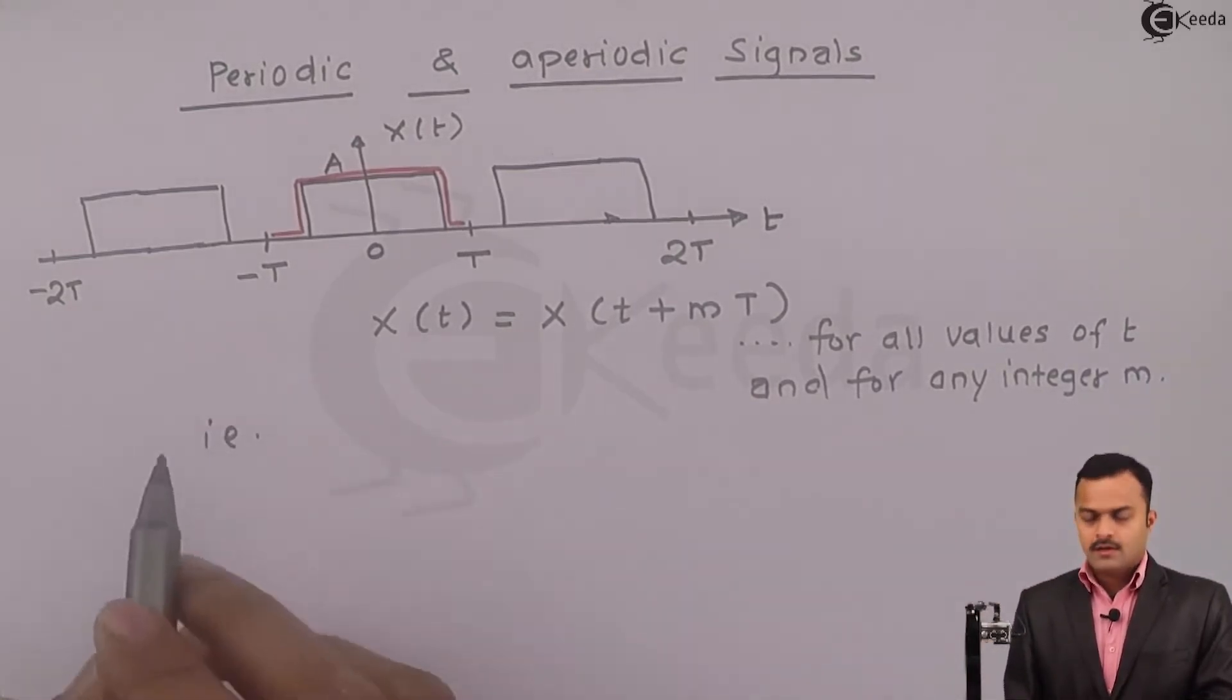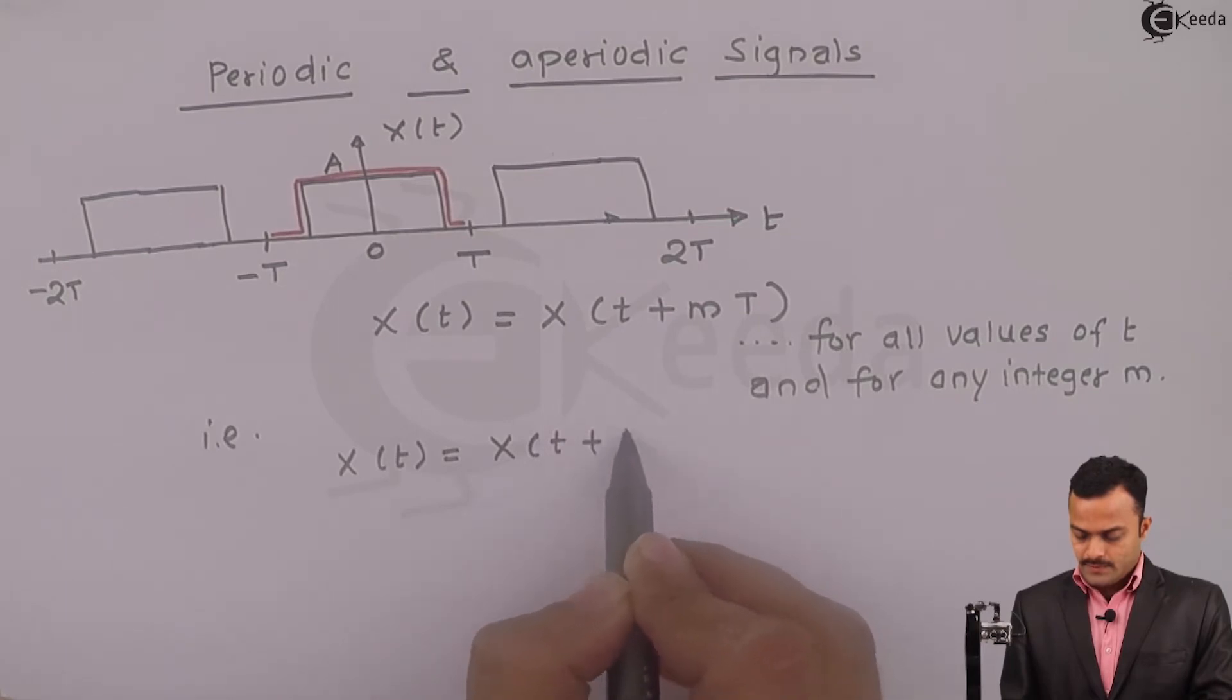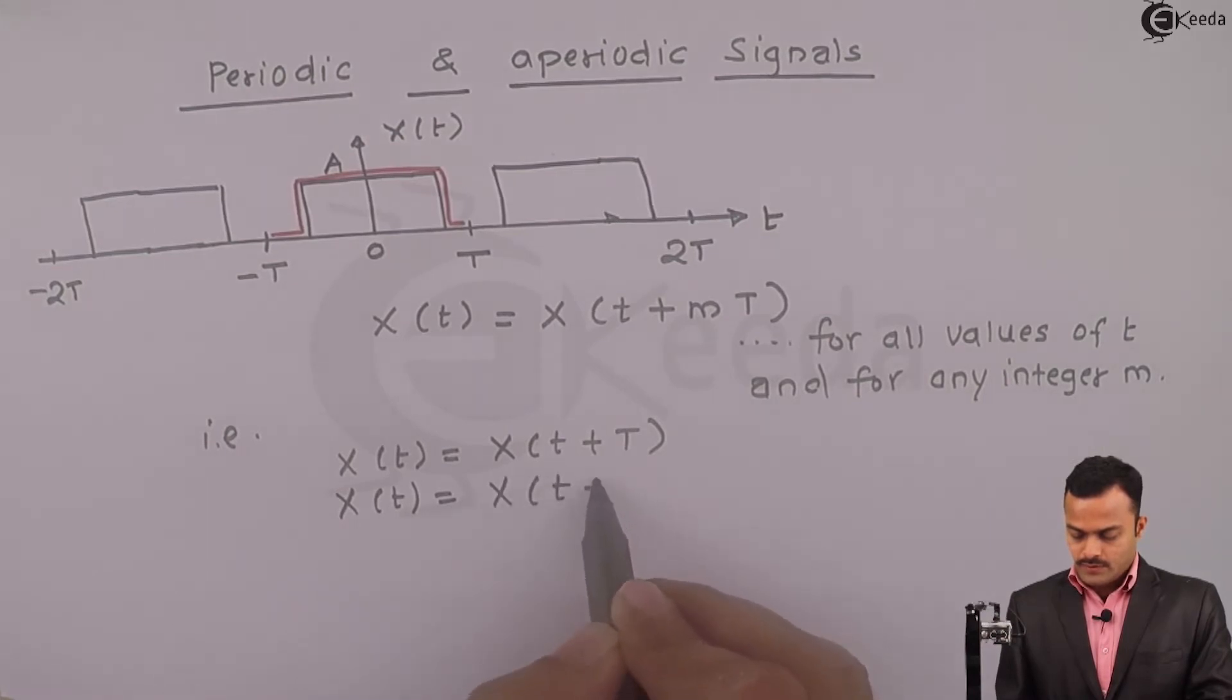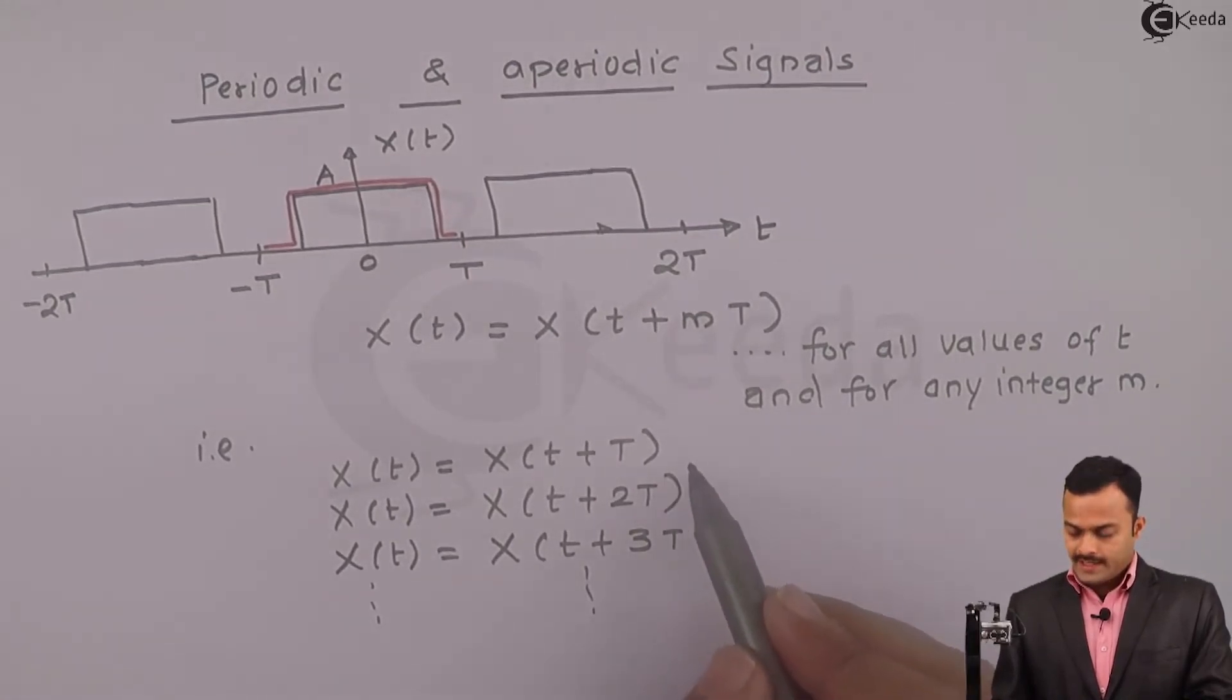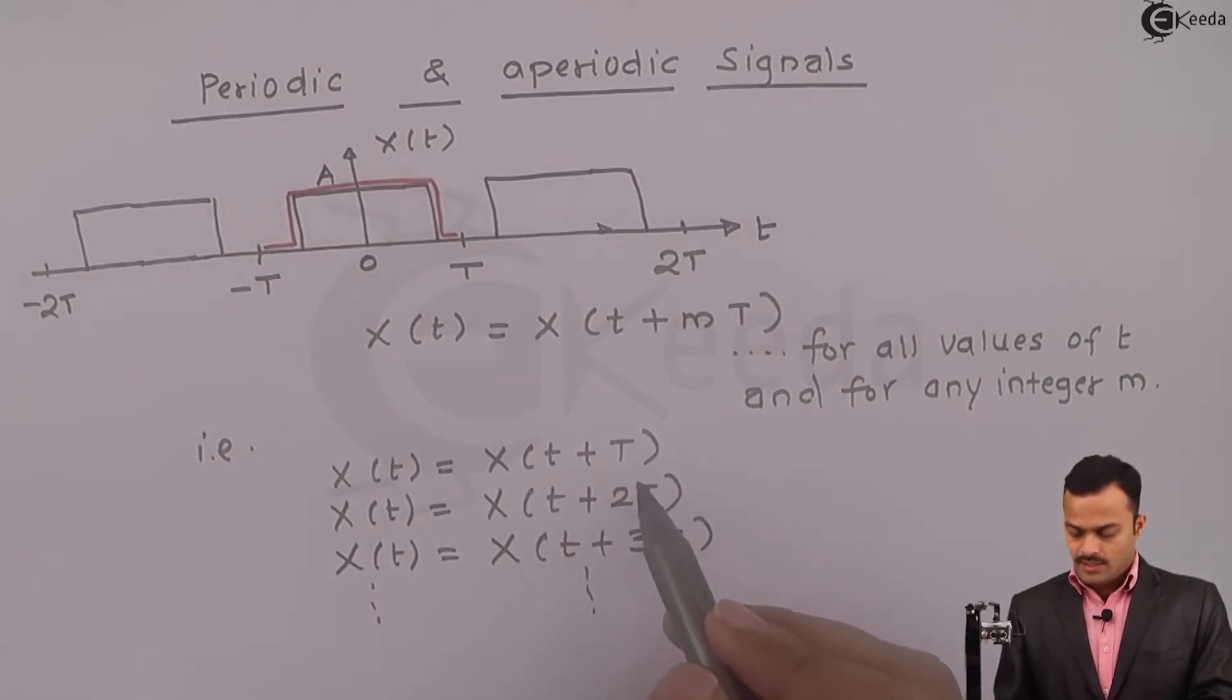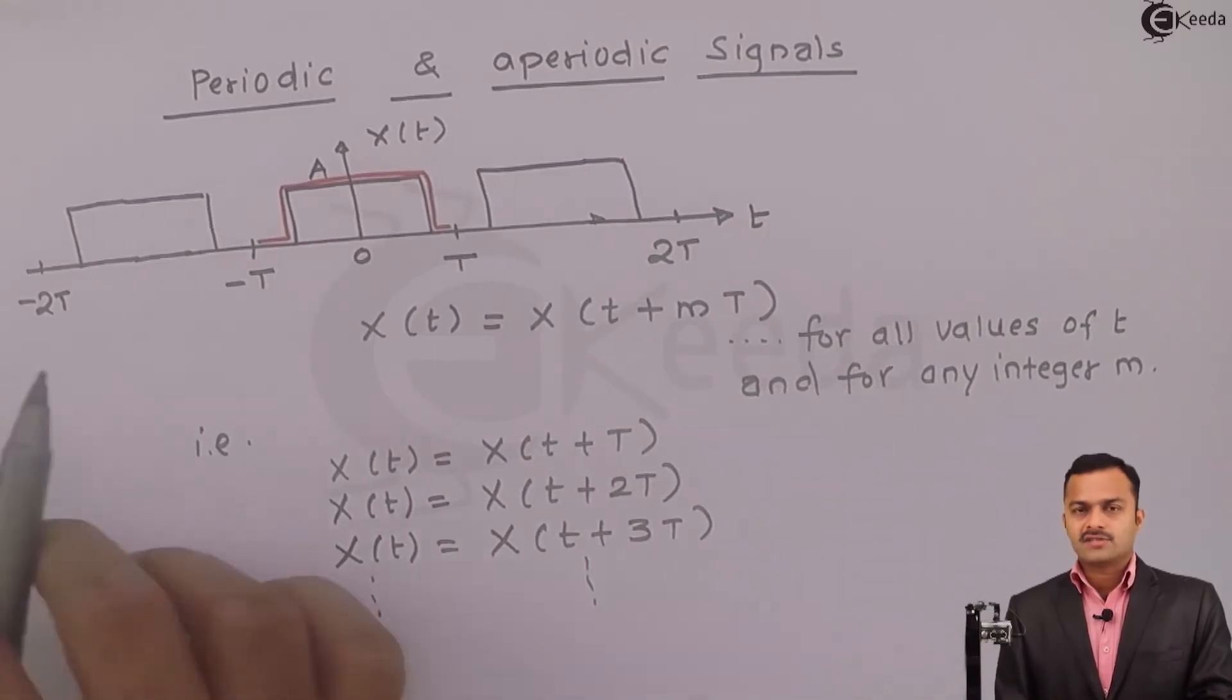That is, I can say x(t) equal to x(t plus capital T), or x(t) equal to x(t plus 2 capital T), x(t) equal to x(t plus 3T) and so on. Meaning I can have m integer varies from 1 to infinity. Still the signal repeats itself. This is called a periodic continuous time signal because we are considering over here the variable t, which is a continuous time variable.